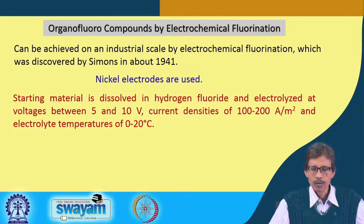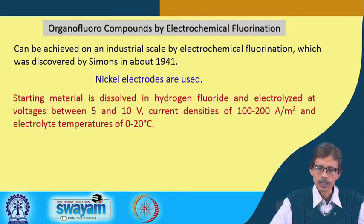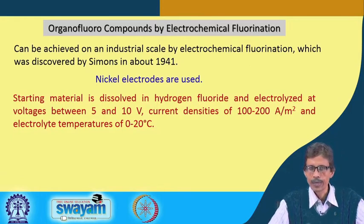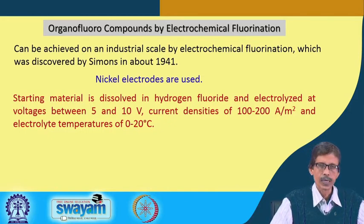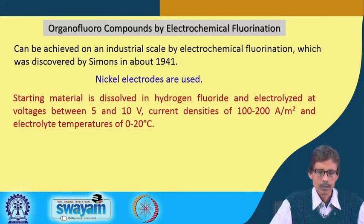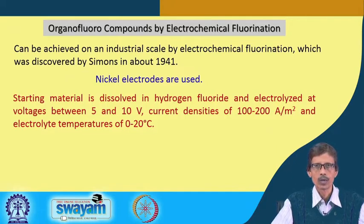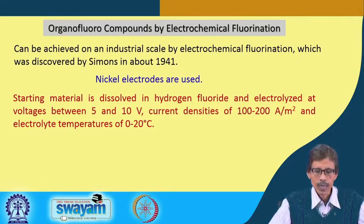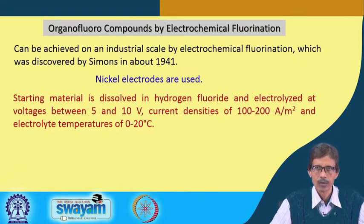The current density is also modest — 100 to 200 amperes per square meter — and the electrolysis temperature is 0 to 20 degrees Centigrade. The conditions for electrochemical production of organofluorine compounds are very friendly: no adverse medium, no very high voltage, no very high current density, and no very high temperature — all are very reasonable.